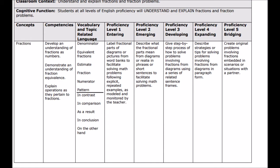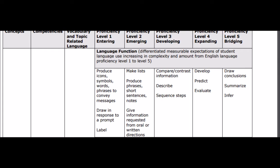For every topic and content area there is a sheet that looks like this. This one is specifically for writing, specifically for math. This tells me that at an entering level — level one — she can label fractional parts of diagrams. There are other language functions I can have her do: for entering, I can have her produce icons, symbols, words, and phrases to convey messages. She can draw in response to a prompt, and she can label.